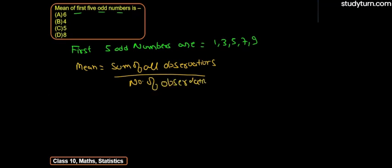Mean equals sum of observations. So 1 plus 3 plus 5 plus 7 plus 9, divided by number of observations. Given first 5 terms, number of observations is 5.